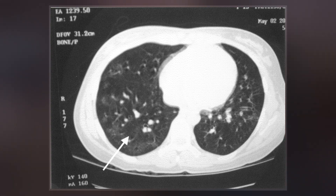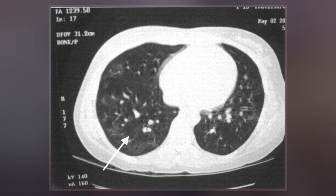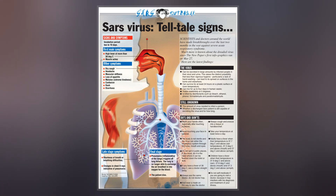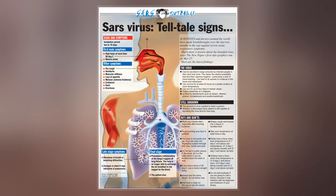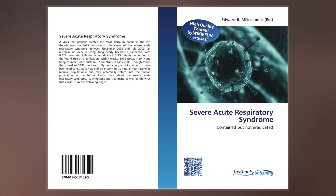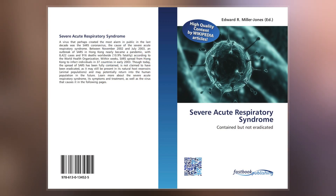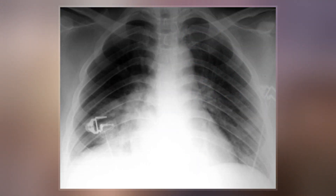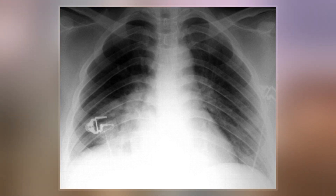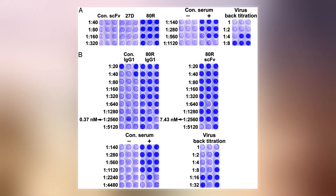SARS-CoV may be suspected in a patient who has certain criteria. For a case to be considered probable, a chest X-ray must be positive for atypical pneumonia or respiratory distress syndrome. The WHO has added the category of laboratory confirmed SARS for patients who would otherwise be considered probable, but who have not yet had positive chest X-ray changes, but have tested positive for SARS based on one of the approved tests.